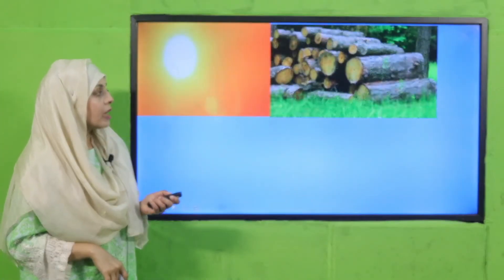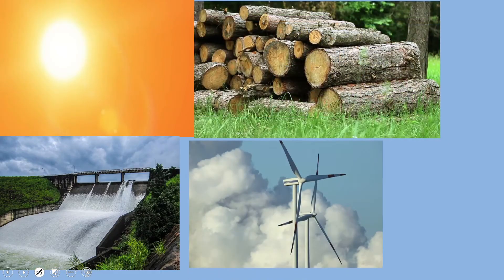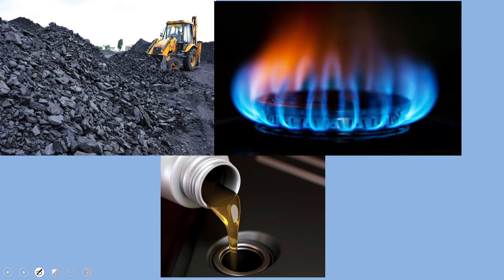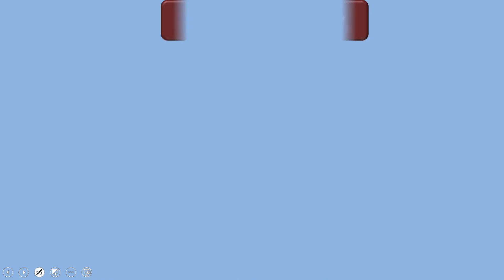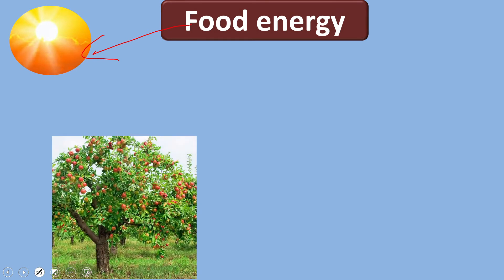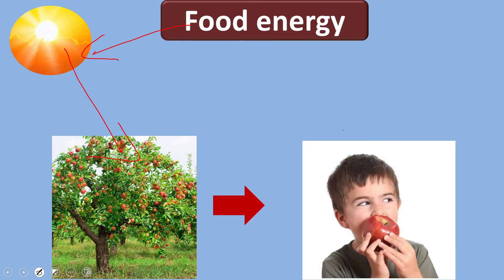Natural sources of energy include the sun, wood, water, wind, coal, petroleum, and natural gas. Food energy comes from the sun — because plants make their food in the presence of sunlight, and human beings and animals utilize this food for energy. So the sun's energy is very important for living things.